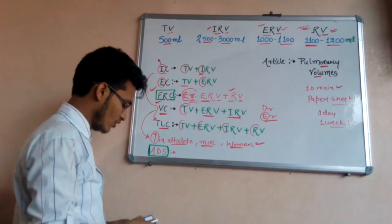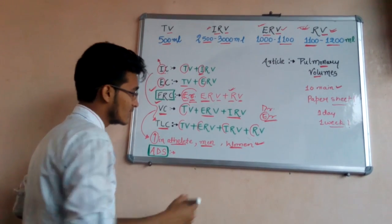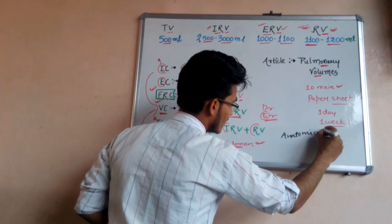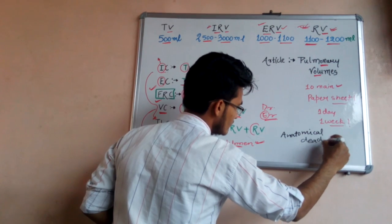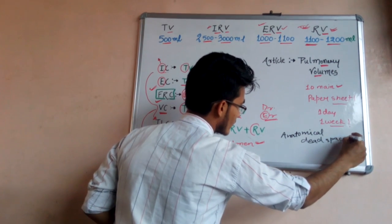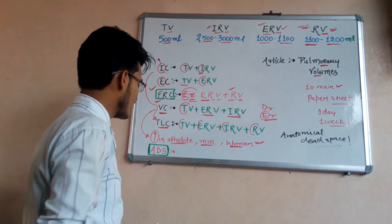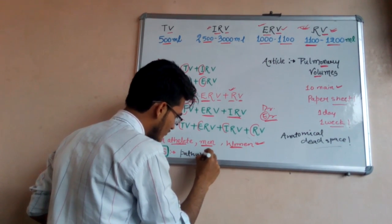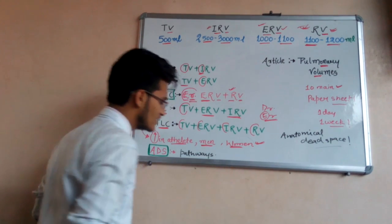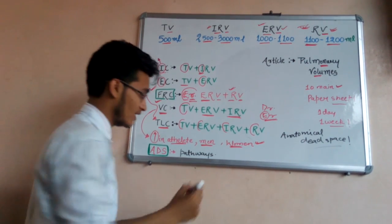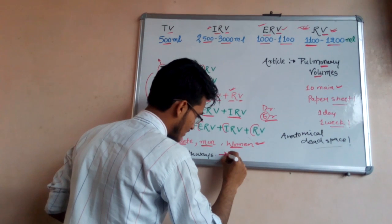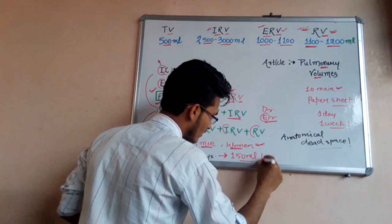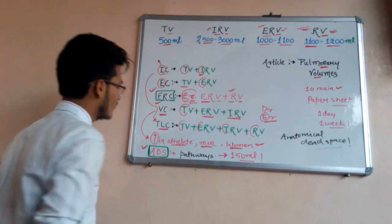The most important respiratory volume not given in NCERT is the anatomical dead space. The anatomical dead space refers to the air that is entrapped in the respiratory pathways and is even present in the body after death. This volume in the pathways is 150 ml, which is very easy to learn.